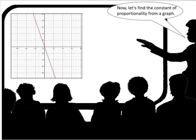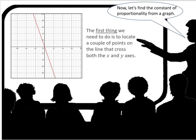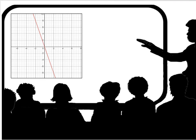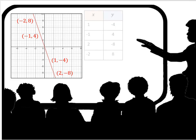Now let's find the constant of proportionality from a graph. The first thing we need to do is to locate a couple of points on the line that cross both the x and y axes. So we find a couple of points that cross directly on those lines.